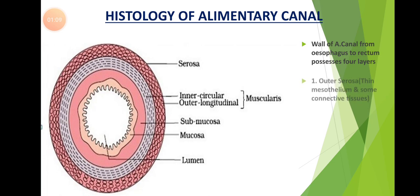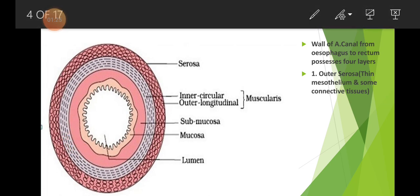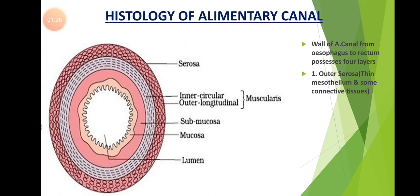The outermost layer is called as the serosa. It is made up of thin mesothelium and also some connective tissue. This is the outermost layer of the alimentary canal.